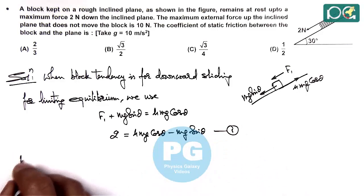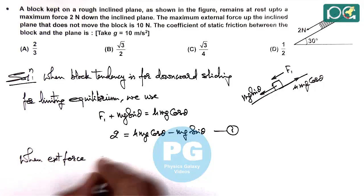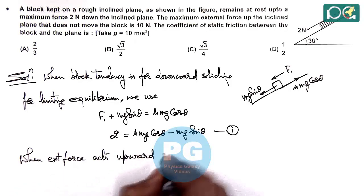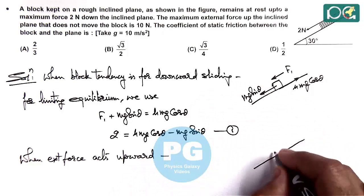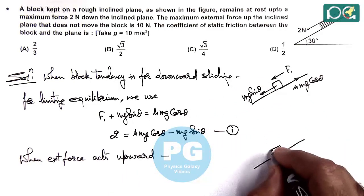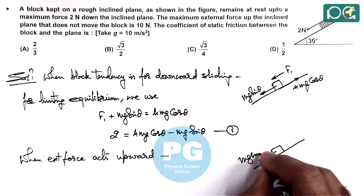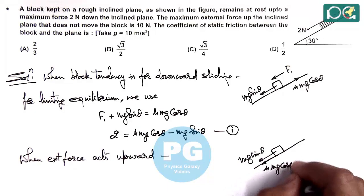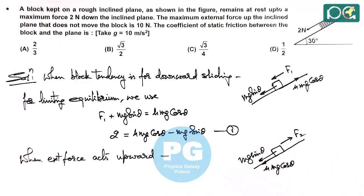When an external force acts upward, the block will have a tendency to slide up. In this case, Mg sin θ acts downward, and friction μ Mg cos θ at limiting value also acts downward. The force F2 acts in the upward direction.